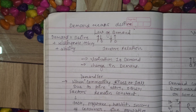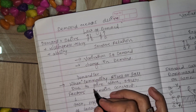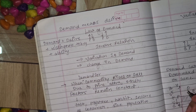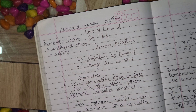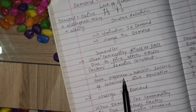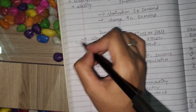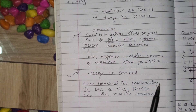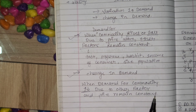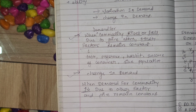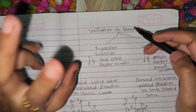Let us understand the distinction between variation in demand and change in demand. Variation in demand is when demand for a commodity rises or falls due to price alone, while other factors remain constant. Other factors include taste, preference, habit, income of consumer, and size of population. Change in demand is when demand for a commodity increases or decreases due to other factors, while price remains constant.